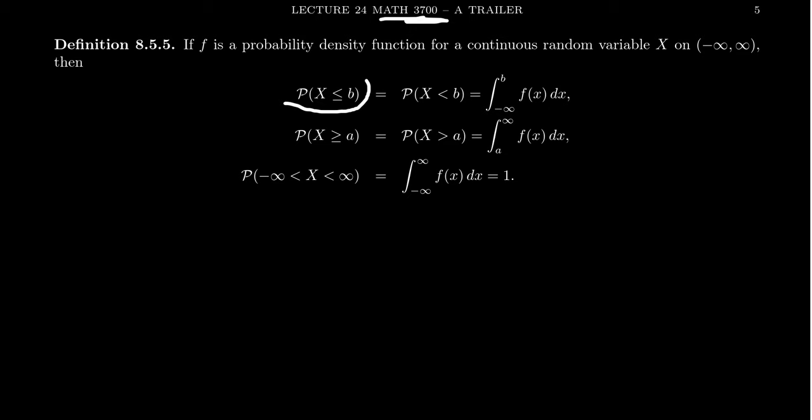We'll be interested in things like, what's the probability that x is less than b? By a previous remark, the probability that x equals exactly b is zero. So there's no difference in saying x is strictly less than b or x is less than or equal to b. This is going to turn out to be an improper integral. If you want to find the probability that x is less than b, it's going to be the integral from negative infinity to b.